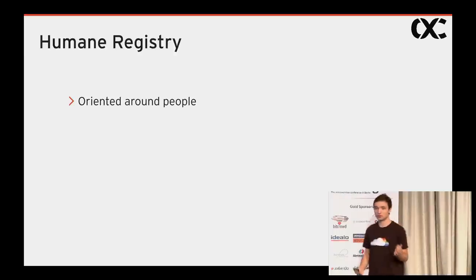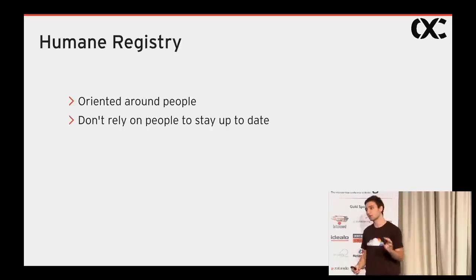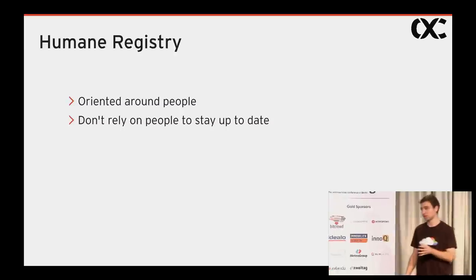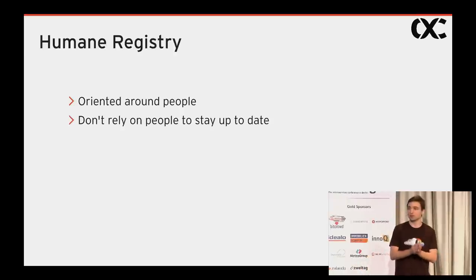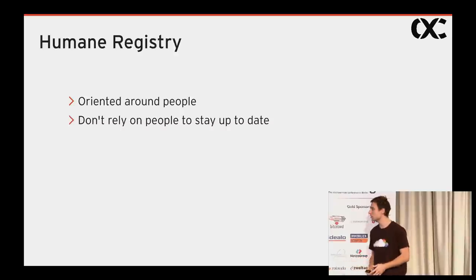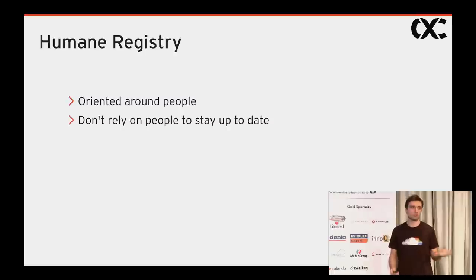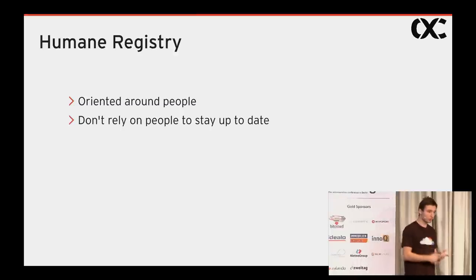The second guiding principle is that even though it is oriented around people, it shouldn't rely on people to stay up to date. This information can get out of sync very quickly, and we shouldn't expect people to update it manually — engineers are not famous for keeping documentation up to date. The article says there are so many data sources available internally: your codebases, version control system, your deployment tools, your issue tracking.